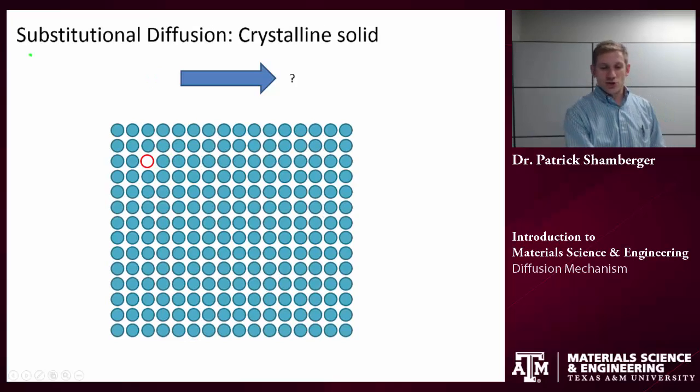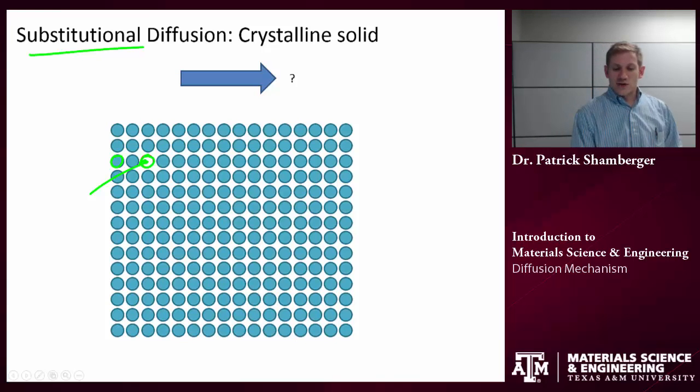What about substitutional diffusion? And that's when an atom is sitting on a site that is usually occupied by some other atom. So if I'm looking at this lattice, there's nowhere for this atom to go, right? It's not going to hop into an interstitial site. And all of the neighboring substitutional sites are occupied. So how do I get the atom to move at all?